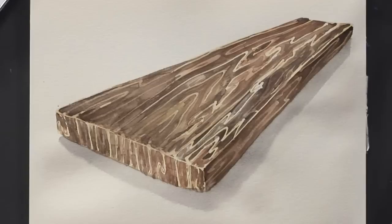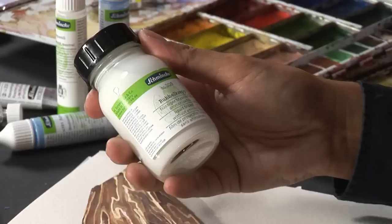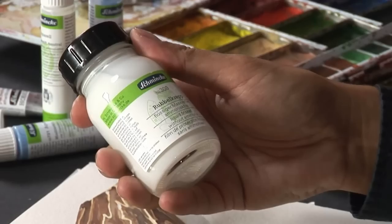Liquid frisket is a transparent masking fluid. You should shake it before application. You'll find liquid frisket in 20ml, 100ml, and 250ml bottles.